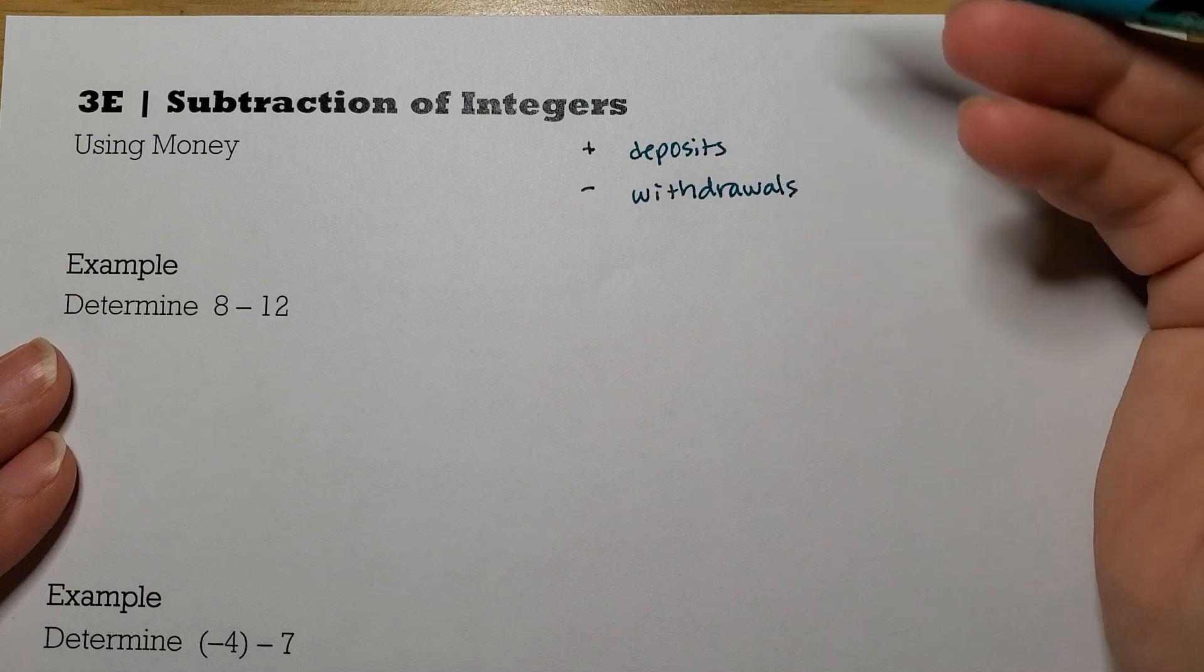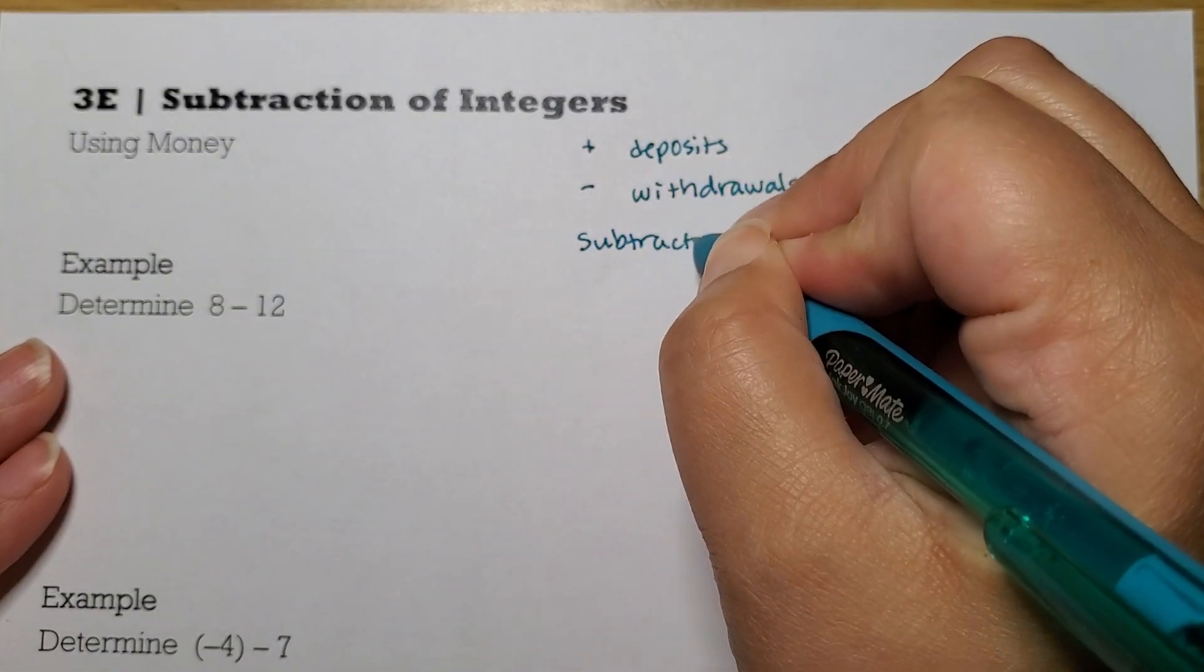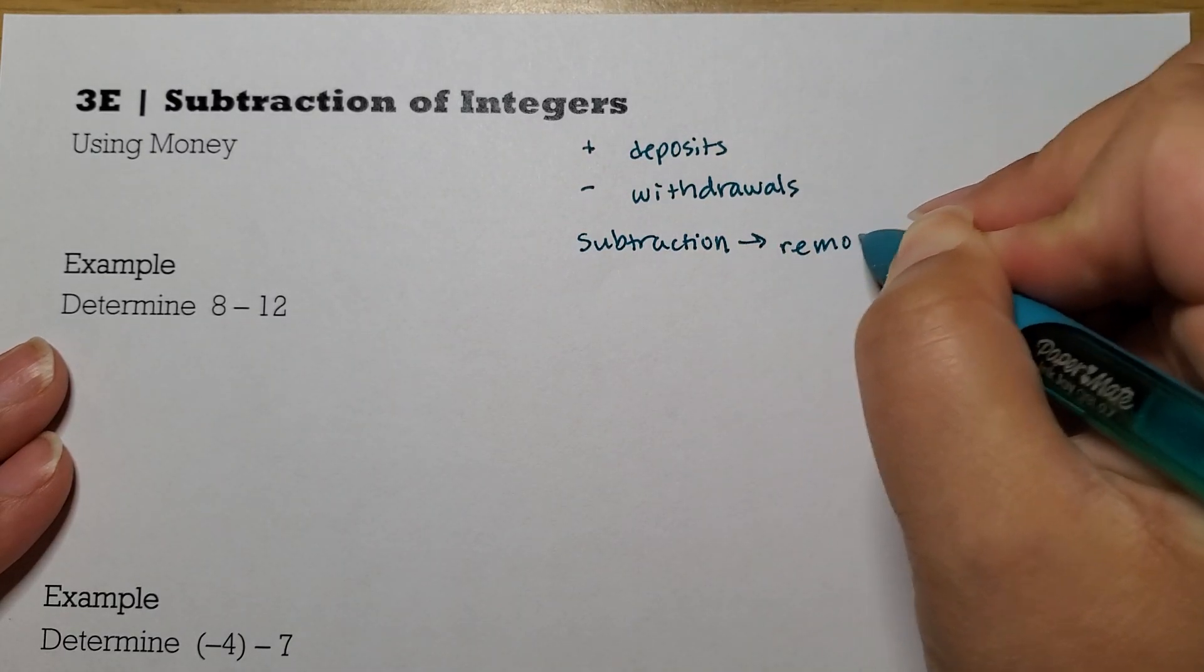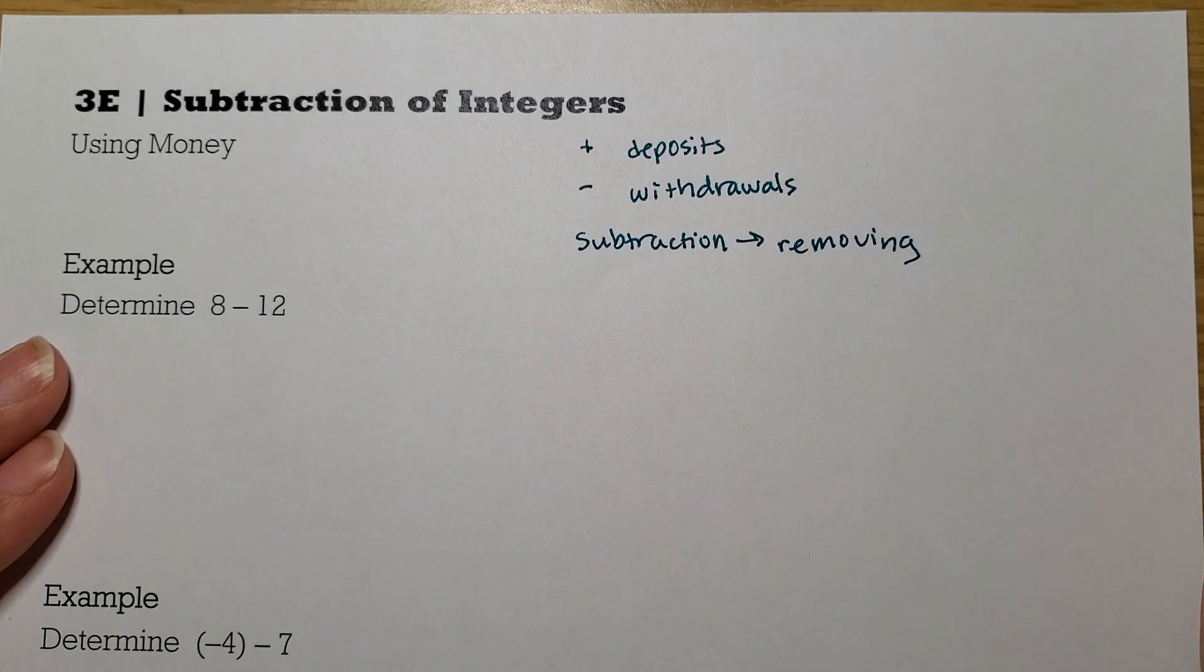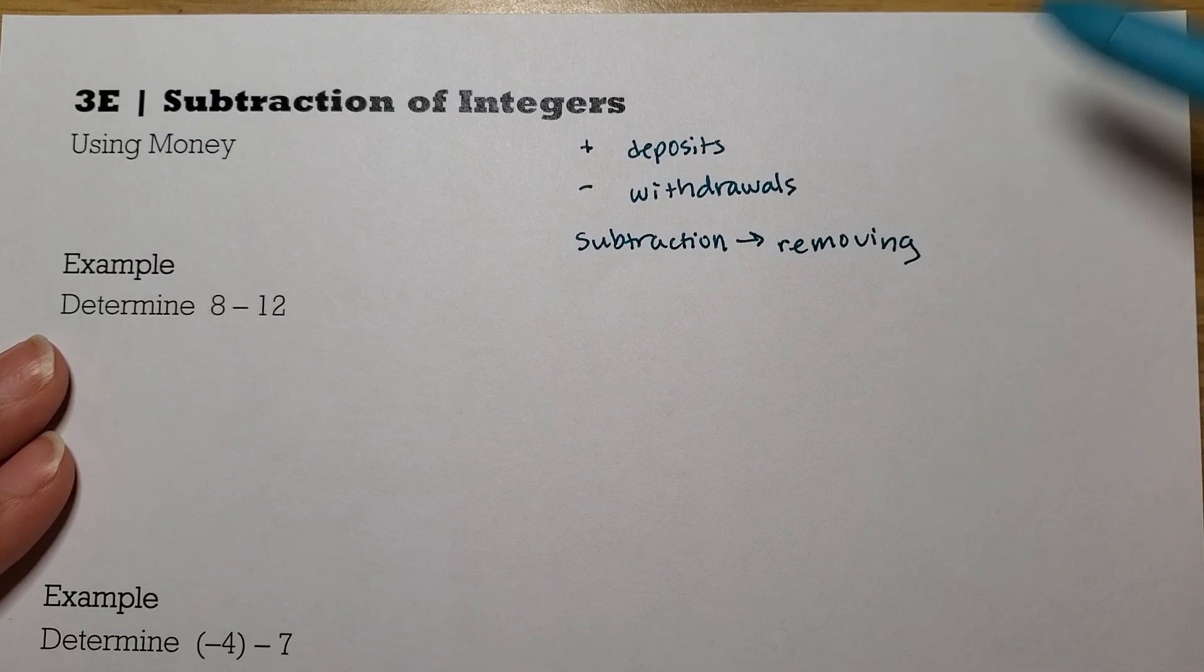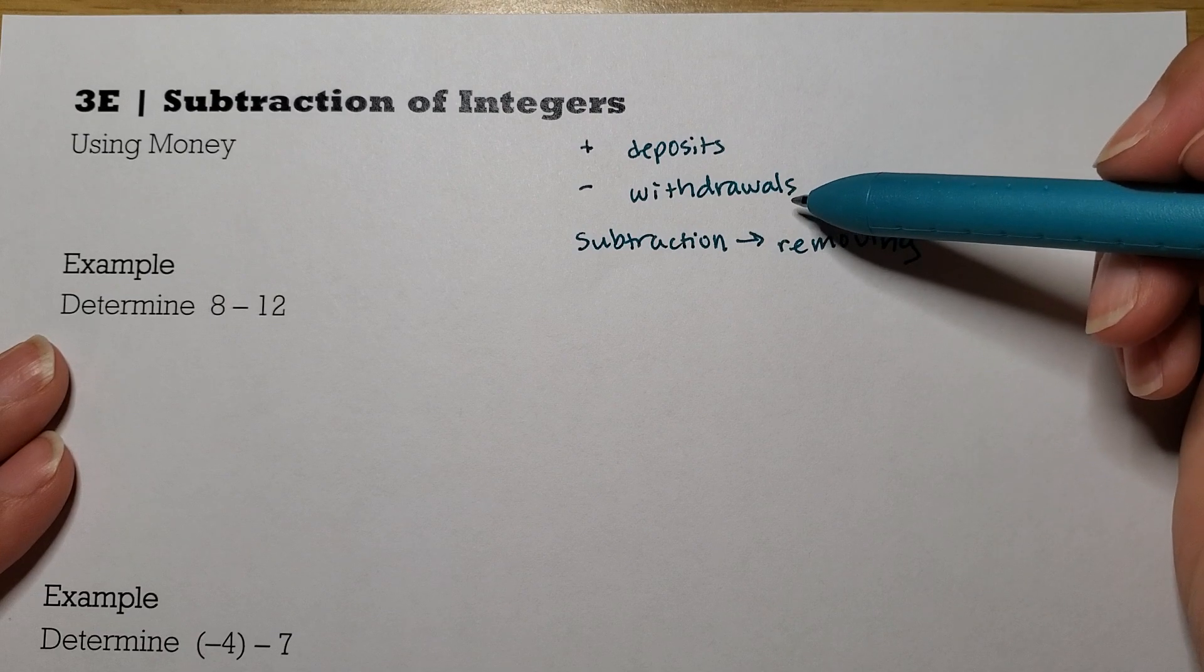The way we're going to think about subtraction, you want to think about it as removing something. So if I'm subtracting a positive number, I want to think of it like removing a deposit. And if I'm subtracting a negative, that's like removing a withdrawal.